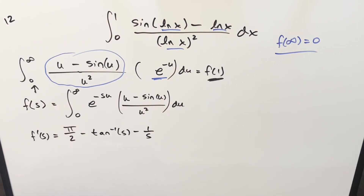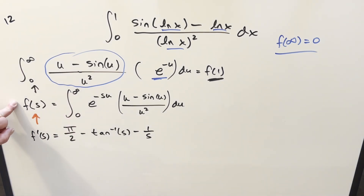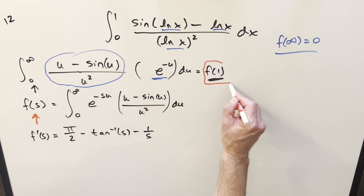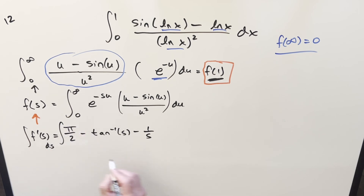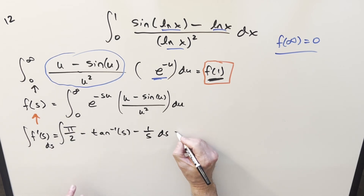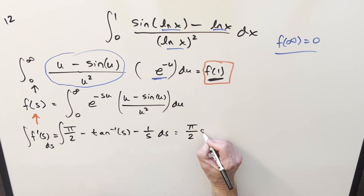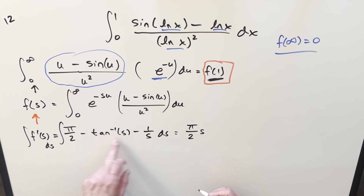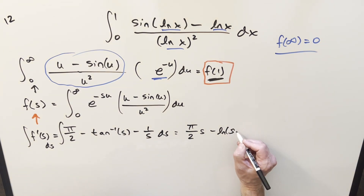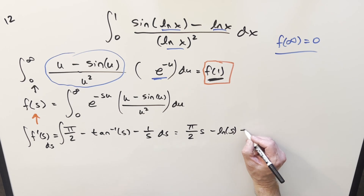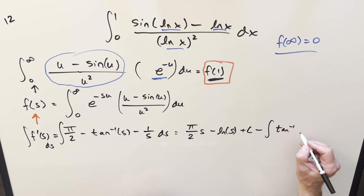Now we need to integrate f'(s) with respect to s to recover f(s). Integrating π/2 gives (π/2)s. Integrating -1/s gives -ln s, dropping the absolute value since we assume positive s. We still need to integrate -arctan(s) ds, which we'll handle with integration by parts, plus a constant c.